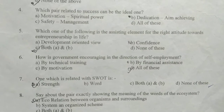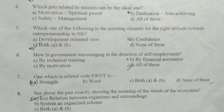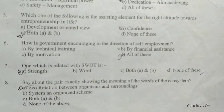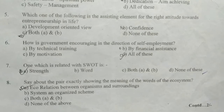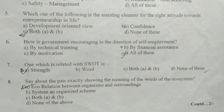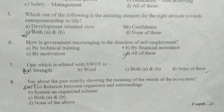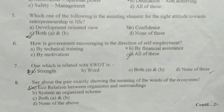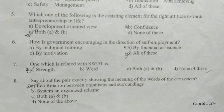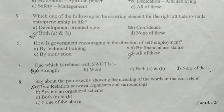The question is about the meaning of the word 'ecosystem.' The options presented relate to the definition. Eco-relation between organism and surroundings is the correct meaning of ecosystem.